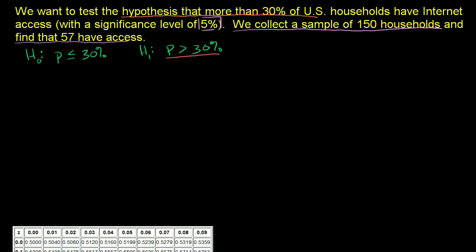So we're going to start off assuming the null hypothesis is true. In that assumption, we're going to have to pick a population proportion or a population mean. We know that for Bernoulli distributions, they're the same thing. What I'm going to do is pick a proportion so high that it maximizes the probability of getting this result.